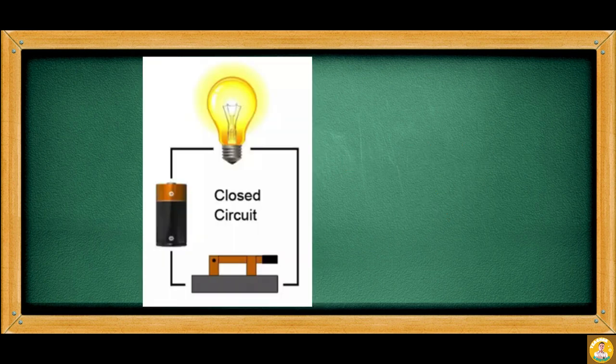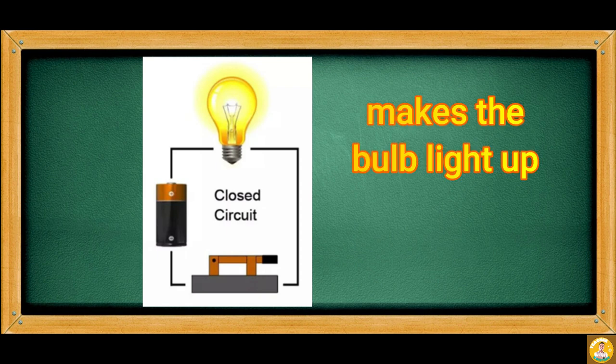In this next picture, a wire is attached to the negative end of the battery, while the other wire is attached to the positive end. Both wires are attached to the bulb. Such a circuit is called a closed circuit. A closed circuit makes the bulb light up because the path of electricity is complete, allowing electricity to flow through it.